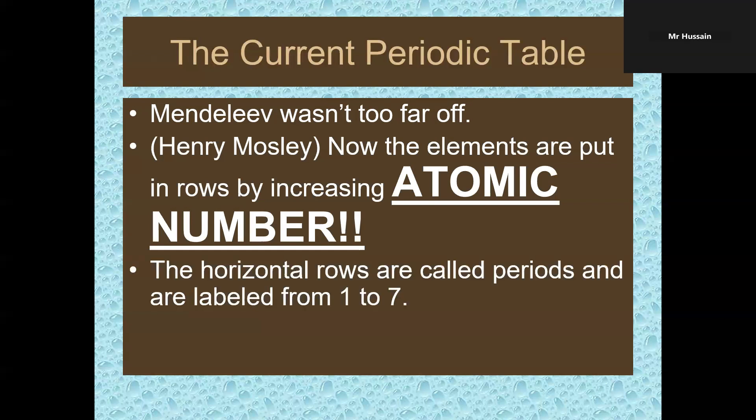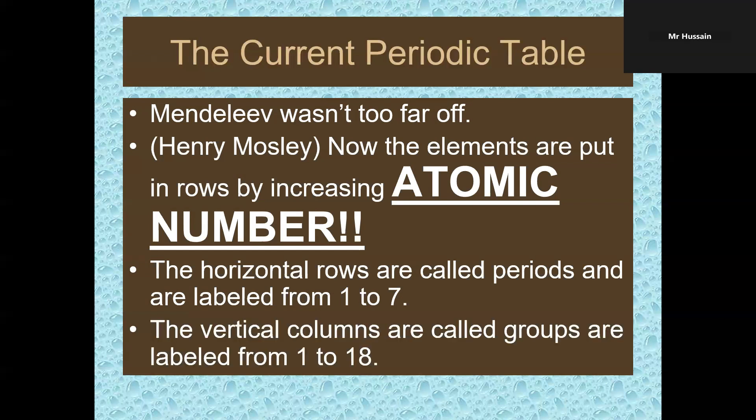Horizontal rows are called periods. If you read from left to right, you will see that there are seven horizontal rows known as periods. If you read top to bottom, they are vertical columns called groups, and there are 18 columns in the periodic table.